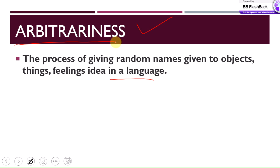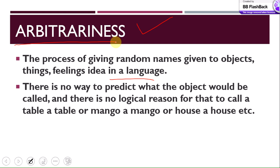There is no logical reason why we call a car a car, a mango a mango, a table a table, or a school a school. People simply decide on one word or sign to associate with an object, thing, idea, or person, and we start calling it that. We call a man a man just because people decided to call a male a man. It was decided randomly, and there is no way to predict what an object would be called.